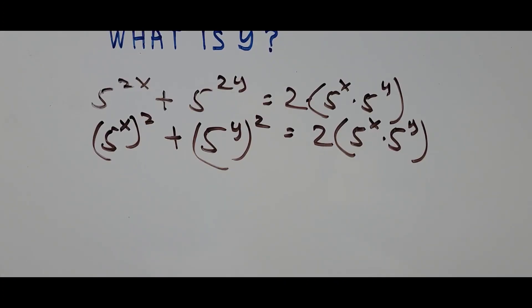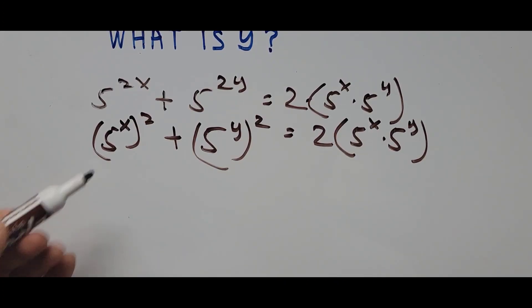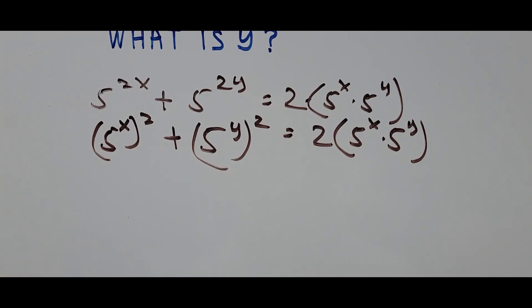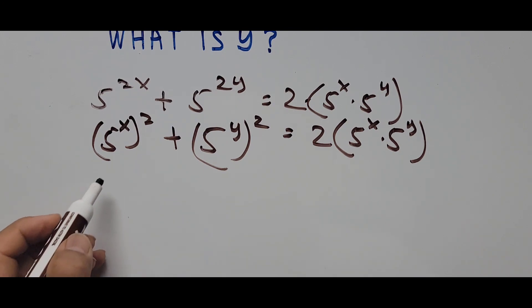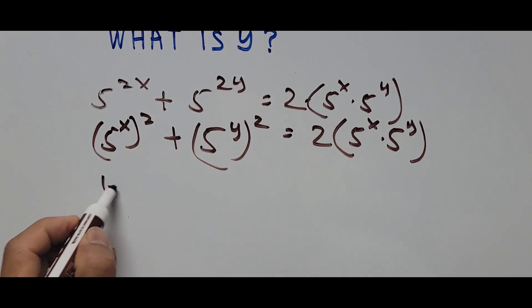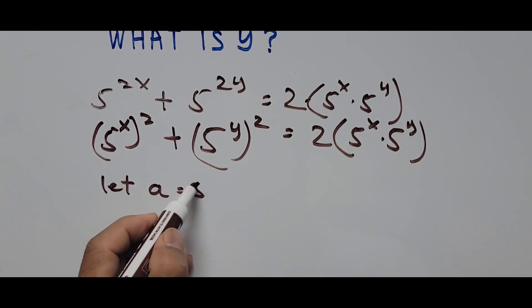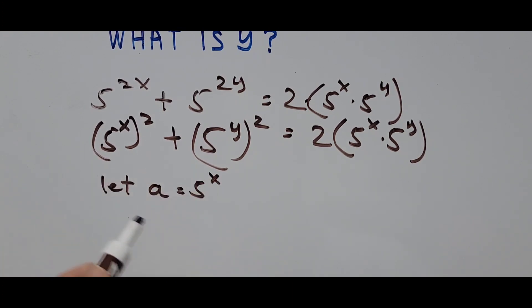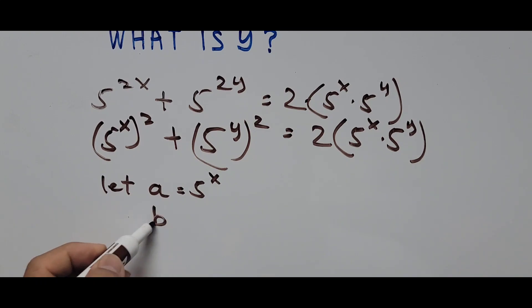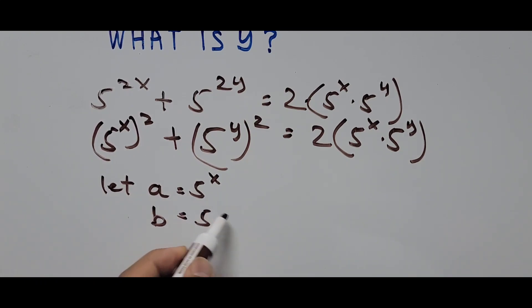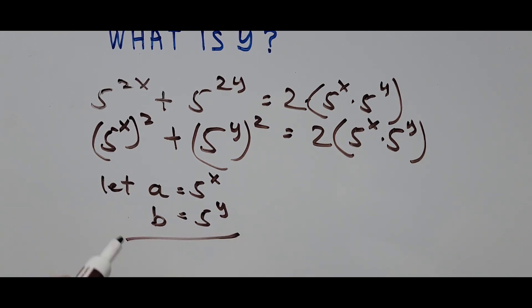Now we need to represent 5^x and 5^y using new variables. So let a equal 5 raised to the x power, and let b equal 5 raised to the y power. We'll be using this substitution.